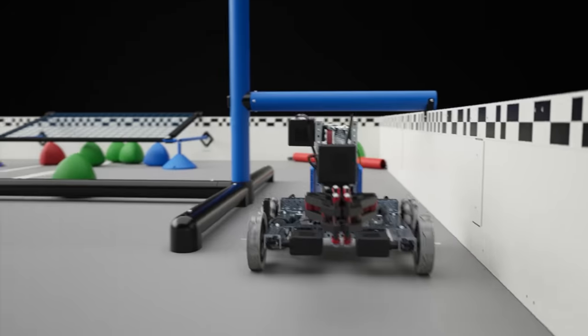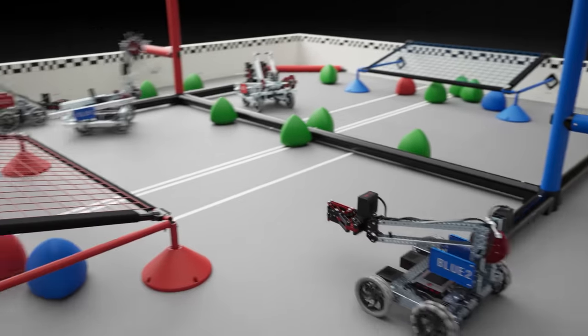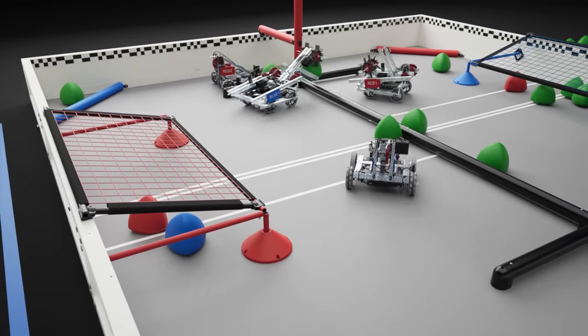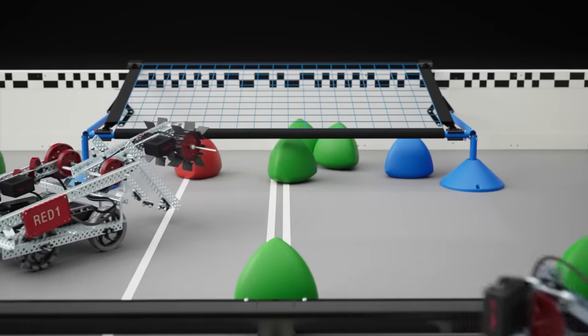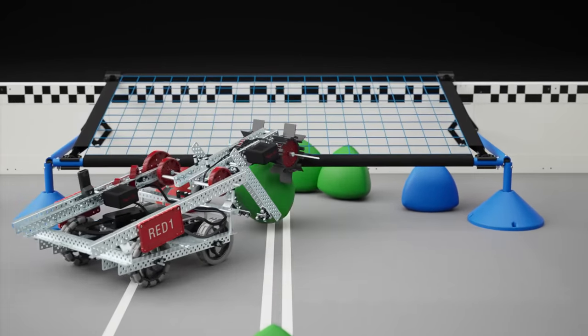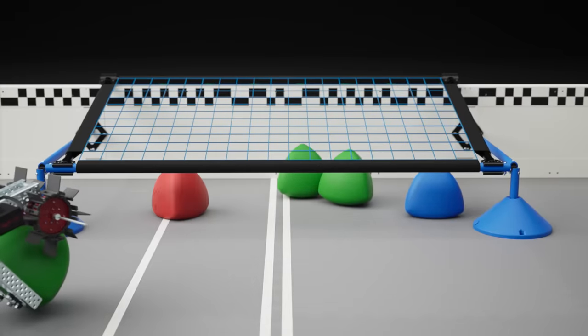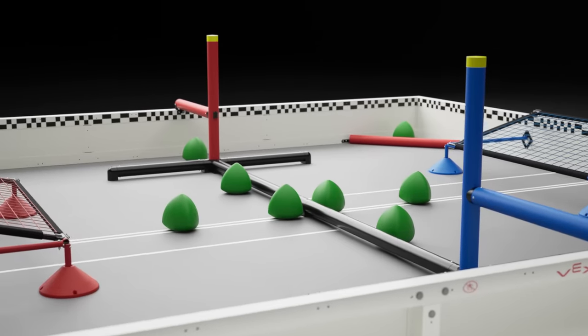However, if an alliance ever finds itself with two robots in the same offensive zone, this is called double zoning. While double zoning, tri-balls that are scored in an alliance's goal are no longer protected from opponent robots.